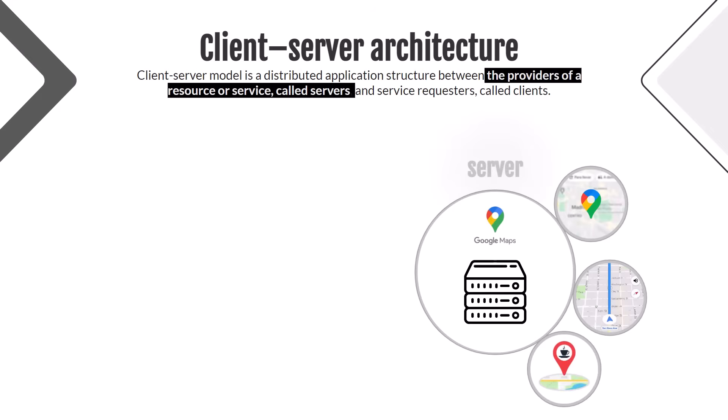There is a server — a powerful computer — which has some data. Like the Google Maps server, which stores data: maps, coffee shops, everything. And there are other systems on the internet which need that data, called clients.